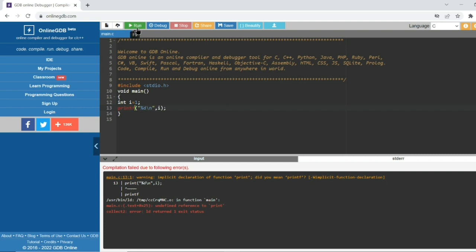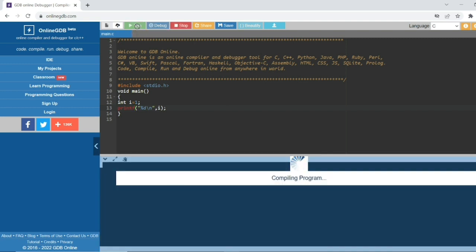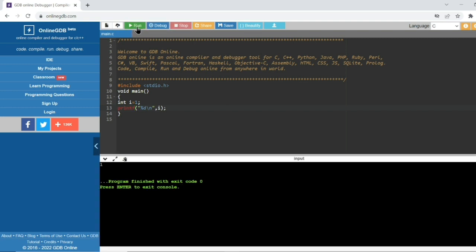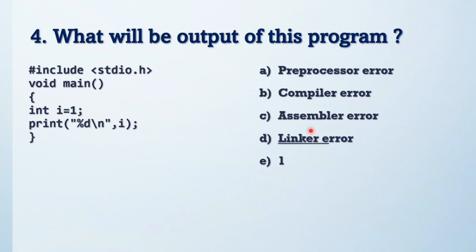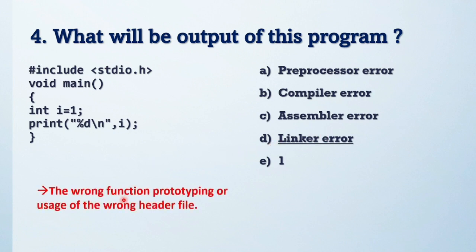There is a printf library in C, but 'print' is not any library in C, so this generates a linker error. If I put printf it gives the proper output. The answer is linker error — wrong function name or usage of the wrong header file declares a linker error, because the linker stage links to the library.